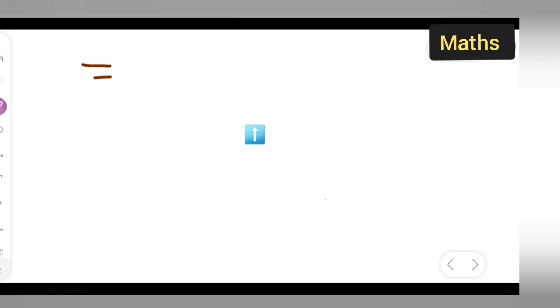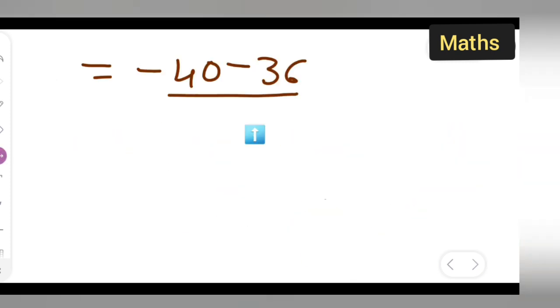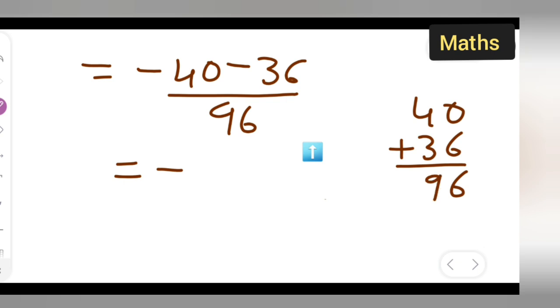So basically we got -40 minus 36 upon 96. Now the denominator is same. Since minus and minus is given we have to add these numbers but sign will be minus. So 40 and 36 we are adding. 0 plus 6 is 6, 4 plus 3 will give you 9.